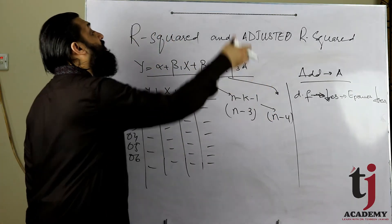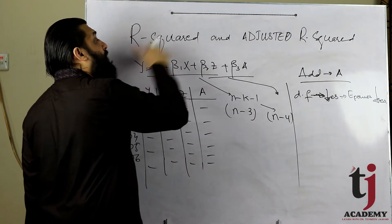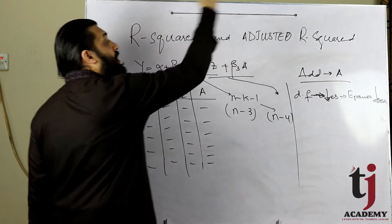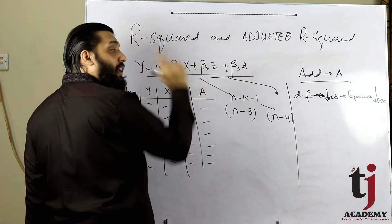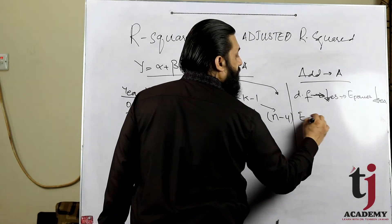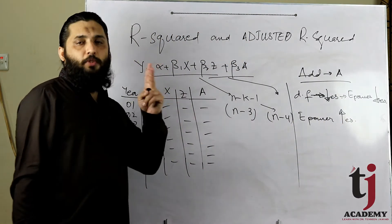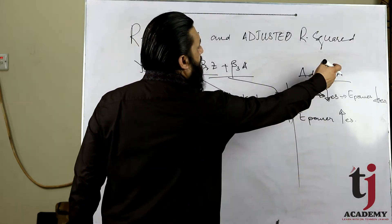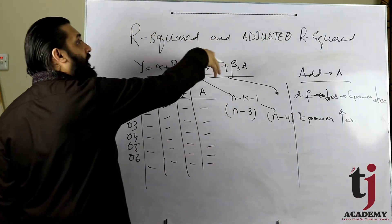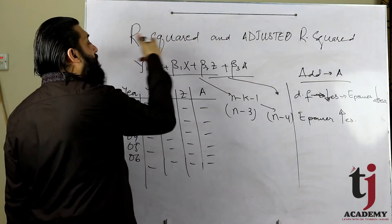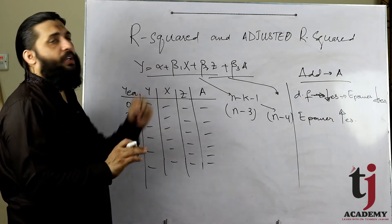دوسرا aspect یہ ہے کہ add کیا گیا variable most relevant بھی ہو سکتا ہے۔ جب آپ regression model میں dependent variable y کے حوالے سے most relevant variable add کریں گے تو relevant variable کے addition کی وجہ سے explanatory power بڑھ جائے گی۔ تو variable add ہونے سے دو چیزیں نظر آئیں: degree of freedom کم ہوئی جس سے explanatory power کم ہوئی، اور variable کی relevancy کی وجہ سے explanatory power بڑھ گئی۔